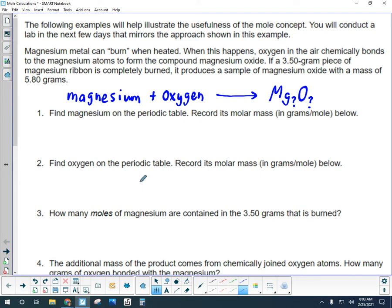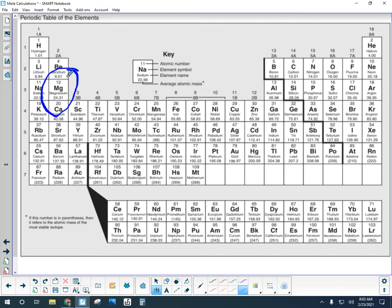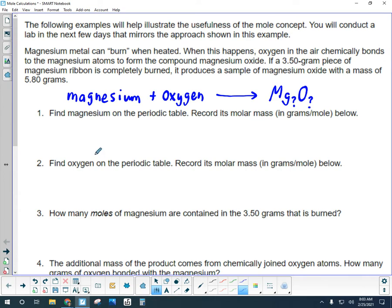So the first thing we would need to do here is figure out what is the molar mass of each of these elements. The molar mass is just the grams per mole. So if we go to the periodic table and find magnesium, we see this number here, 24.31. You can think of that number as the relative mass of magnesium, but it also represents the grams in one mole of magnesium. So 24.31 grams of magnesium is equivalent to one mole of magnesium.